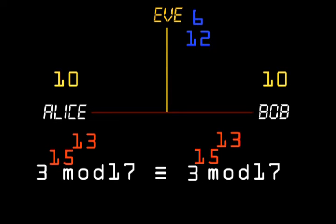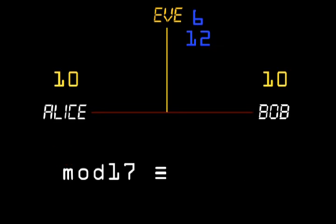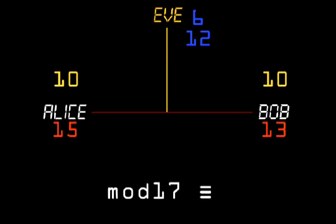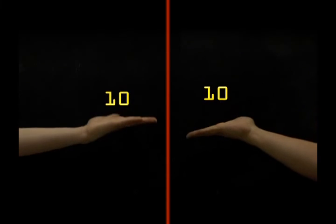So they both calculated 3 raised to the power of their private numbers. Without one of these private numbers, 15 or 13, Eve will not be able to find the solution. And this is how it's done.